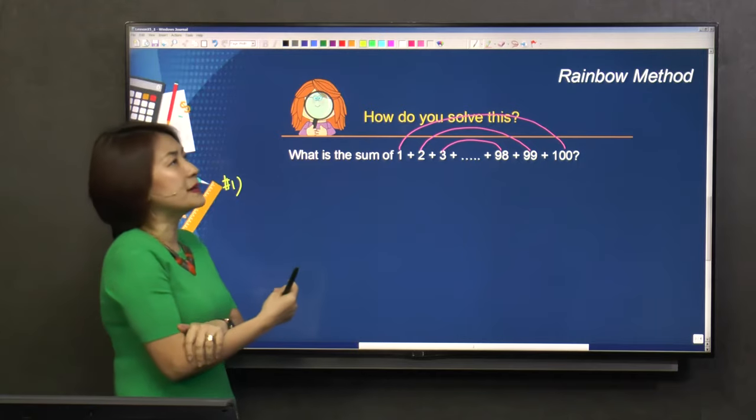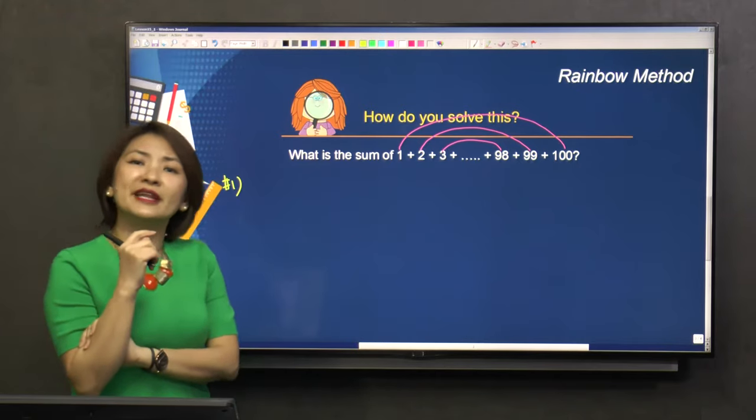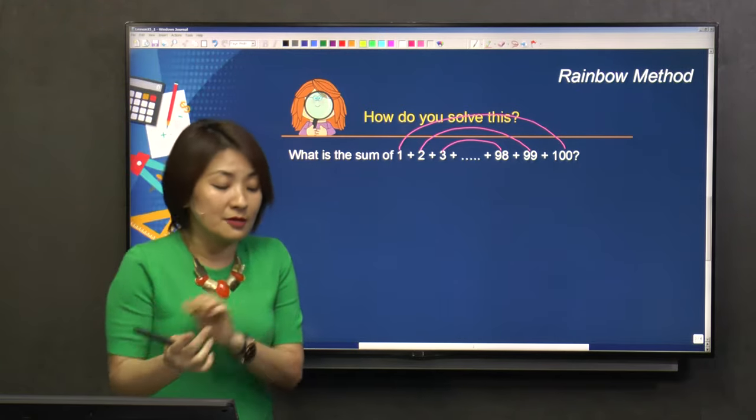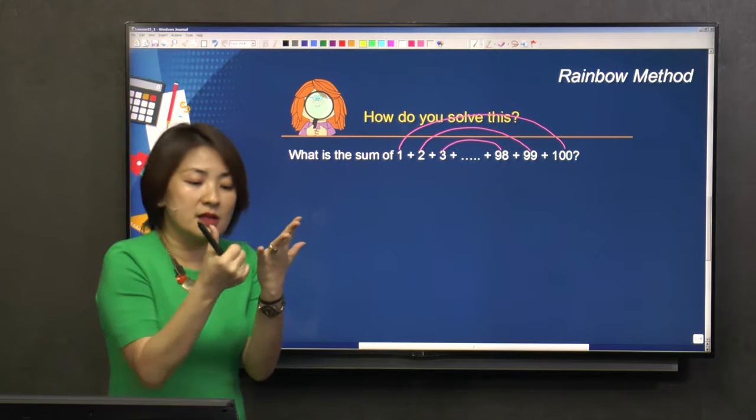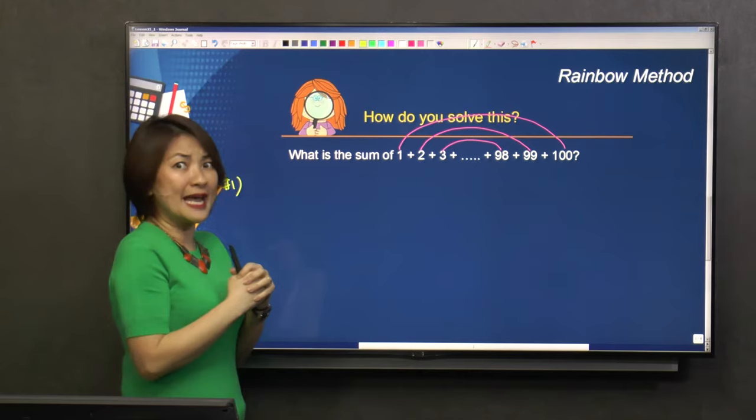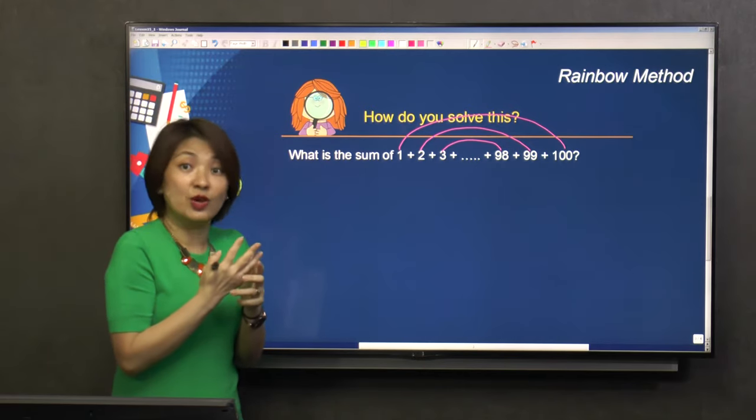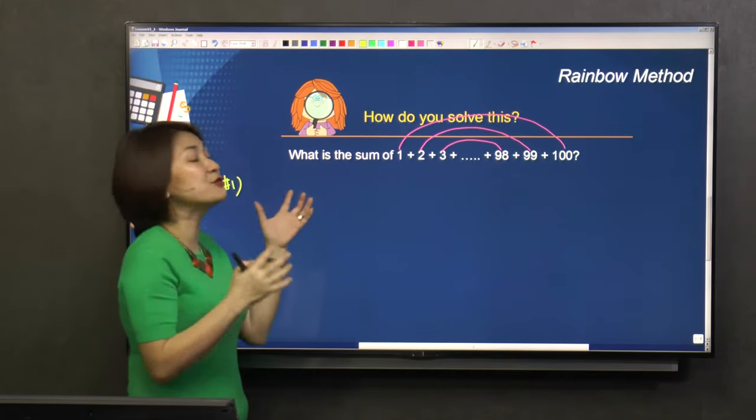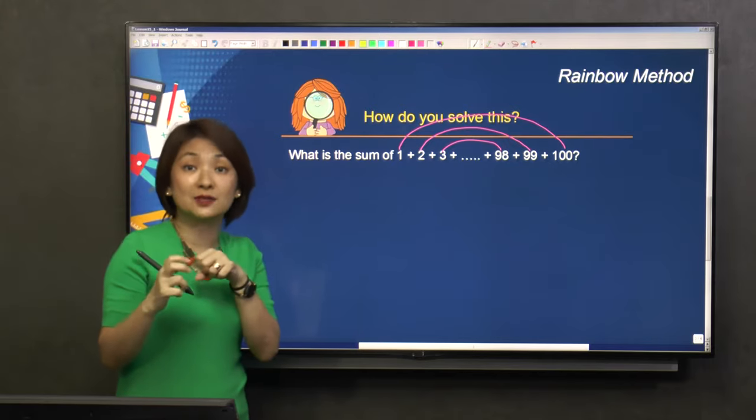Now, if I ask you from 5 to 15, what are you going to do? 5, 6, 7, 8, 9, 10... you're going to count, right? So if I say 5 to 85, are you going to count? No, you're not going to do that. So you will have to find a certain way to do it.